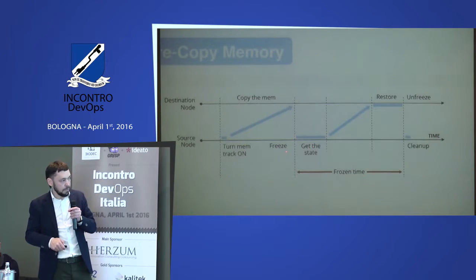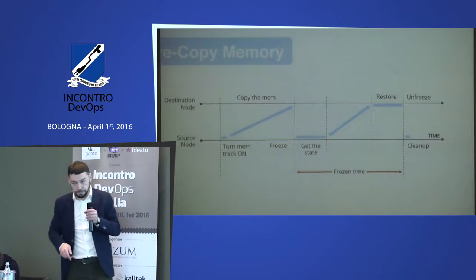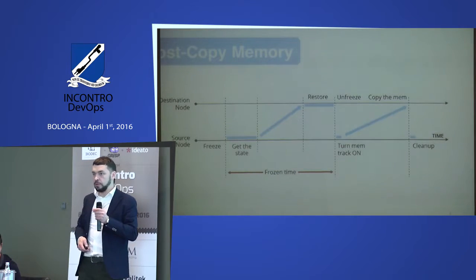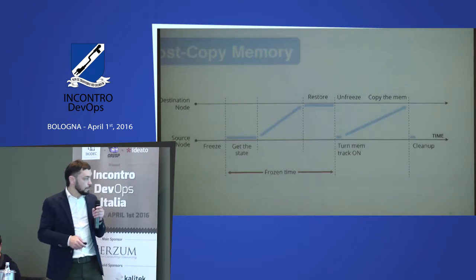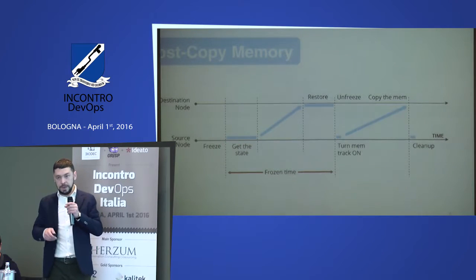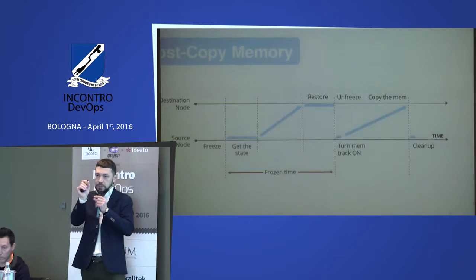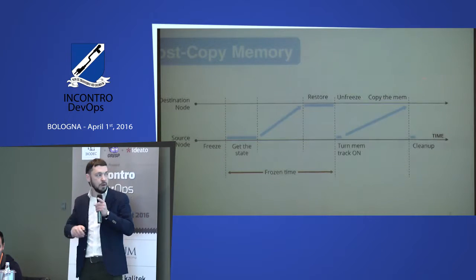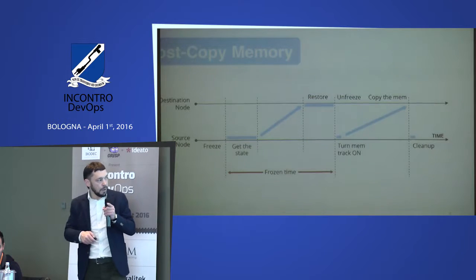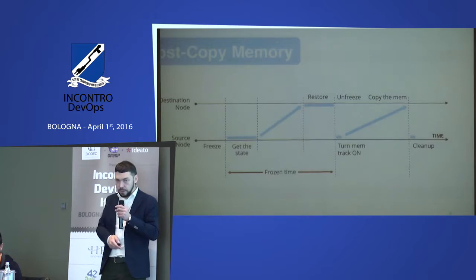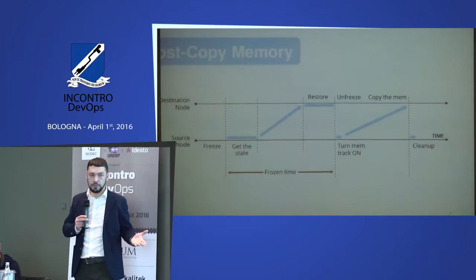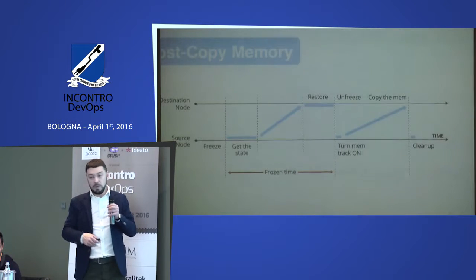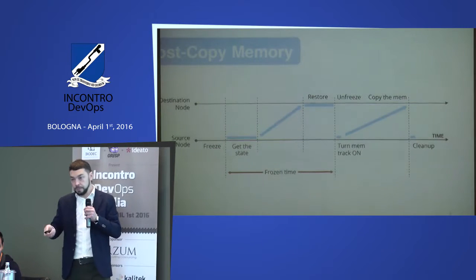Another option for migration is post-copy memory — in other words, lazy migration. How it works: we have the source node, we get the state, but in this case we get the most active pages of RAM and migrate those pages to the destination node first. All requests are now coming to the destination node, and after that we move the rest of the data to the destination node. For some cases one option is better; for others, the other option is better. Today we use pre-copy memory because post-copy is a pretty new solution and was recently implemented.